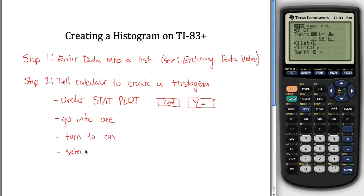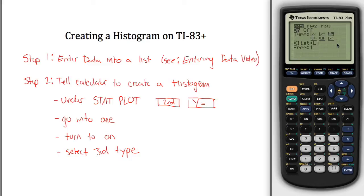Select the third type. Here's six different plots that this thing can make. This one kind of looks like a histogram, that's the one we're trying to do. Go over and highlight that third one. Note the first one's highlighted, third one's where my cursor is, hit enter, and now it says you want a histogram.